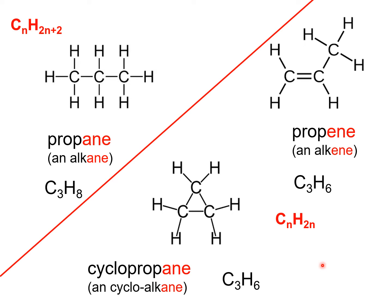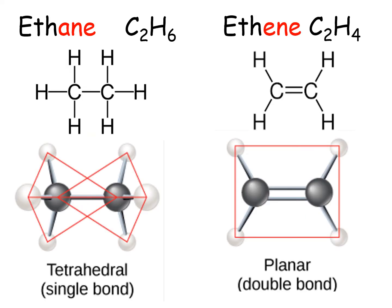We can now identify two formulas: CnH(2n+2) identifies alkanes, and CnH(2n) tells you there is either one double bond or a cyclic structure. The more double bonds or cyclic features you add, the fewer hydrogens there will be in the formula. For this unit, just focus on alkanes — don't worry about the other two; we'll talk about that next week.